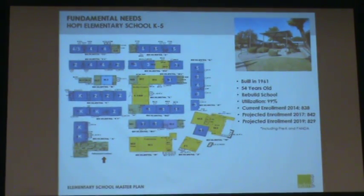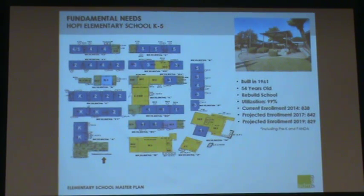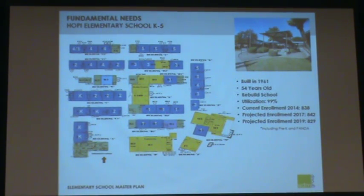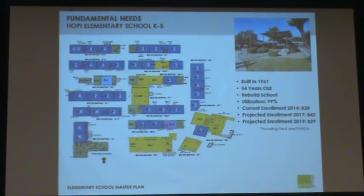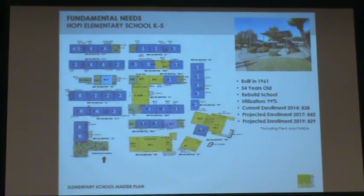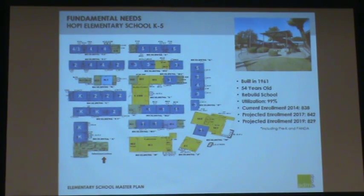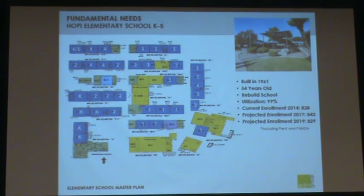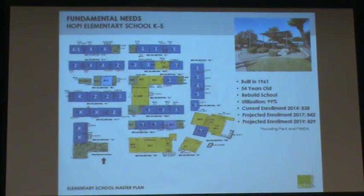Hopi is a totally different animal — it was built in 1961 and is 54 years old. One consideration for this school would be possibly rebuilding it. Utilization is the highest of all elementary schools at 99%, with tons of full classrooms utilized. Current enrollment for November 2014 is 838. Projected enrollment for 2017 is 842, and for 2019 is 829.